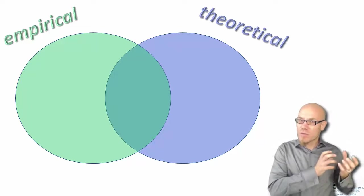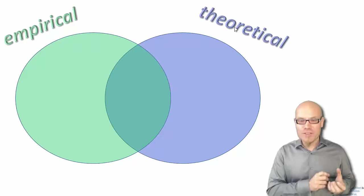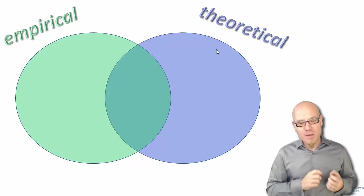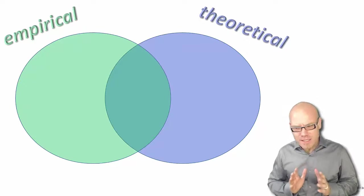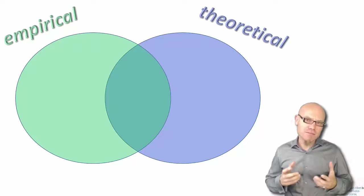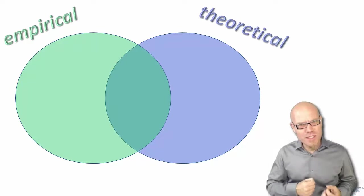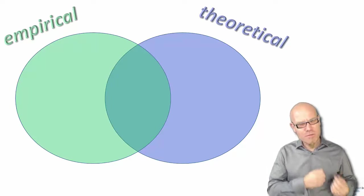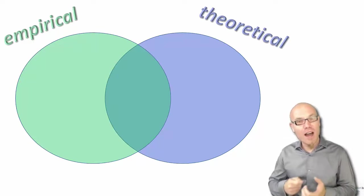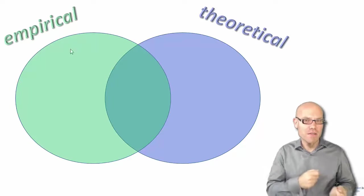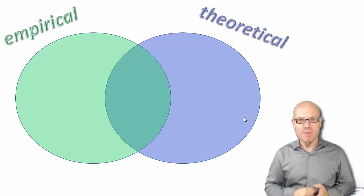And the other way around, if we start with the theoretical side of things, what we do there is, without any explicit or obvious use of data (of course we always have some observations in mind), we usually start from first principles, from axioms, and from these axioms we derive how it should and must work. So they are more like logical conclusions.